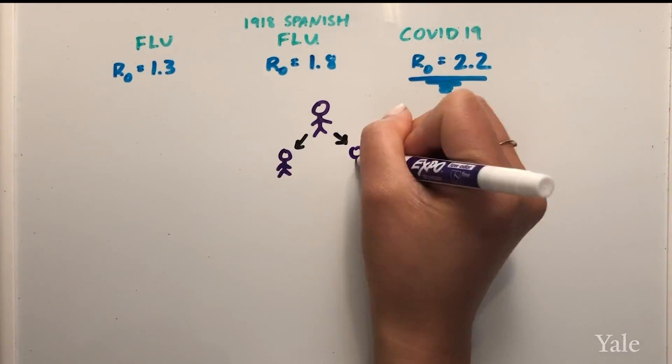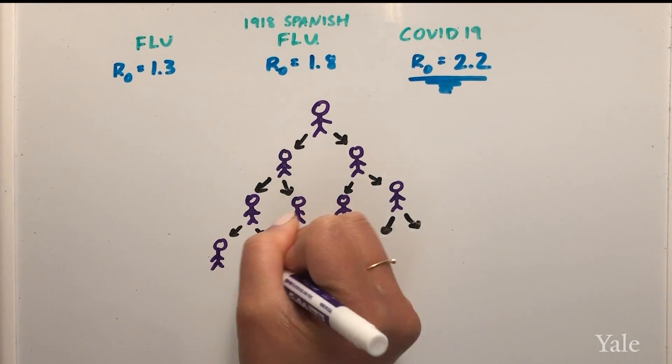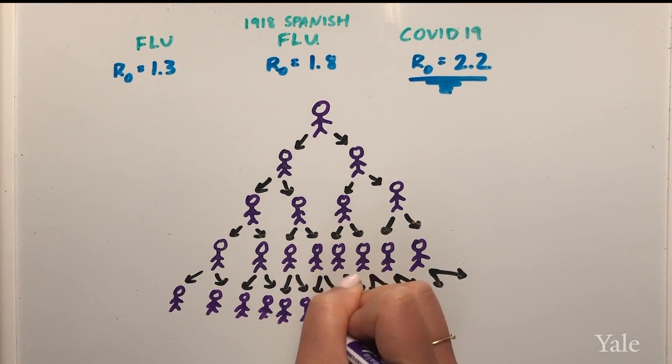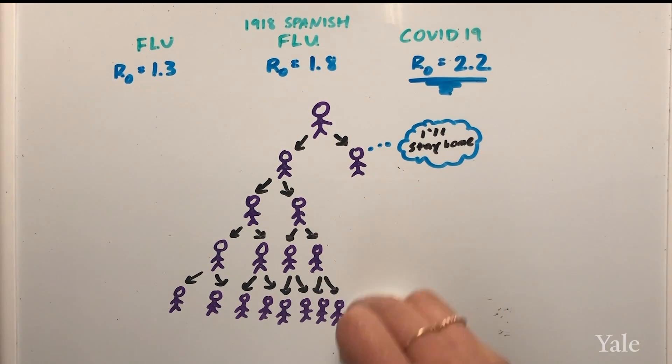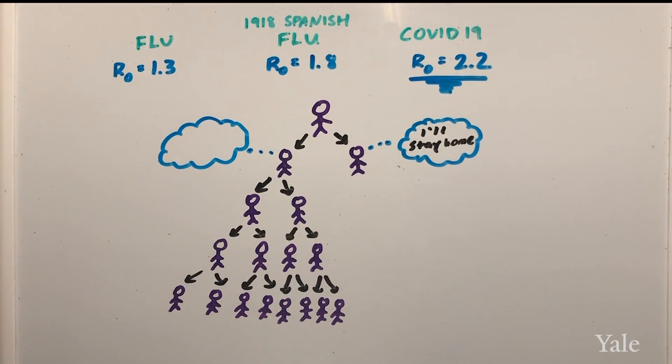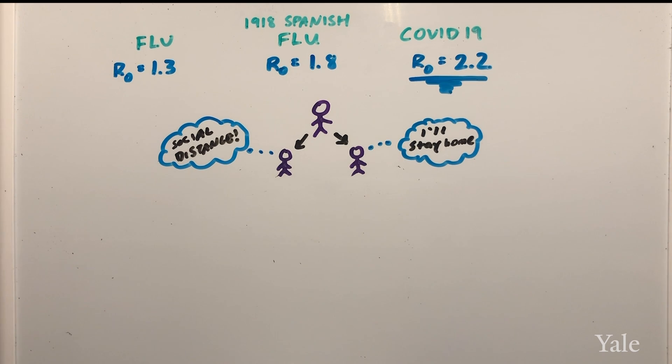Even if we round down to two, you can see how quickly just one infected person can spread the virus to tons of people. But if just one person takes their social responsibility seriously and stays home, look how much spread they can prevent. This is why everyone needs to follow the CDC guidelines and stay home so we can delay the number of cases.